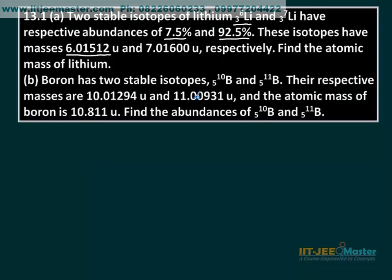Lithium, which you can find in nature, is lithium-6 and lithium-7. If you look at the percentage and find the average atomic mass, how do you find it?